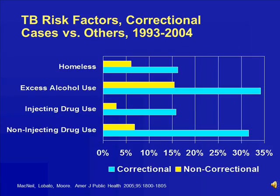This next figure shows some key risk factors for cases, both in correctional facilities and non-correctional facilities. As you can see, the frequency of risk factors such as homelessness, excess alcohol use, and drug use is much higher within the correctional population than in non-correctional TB cases.